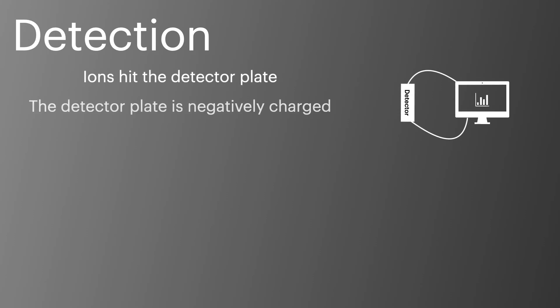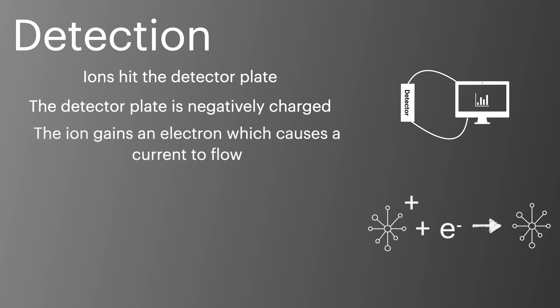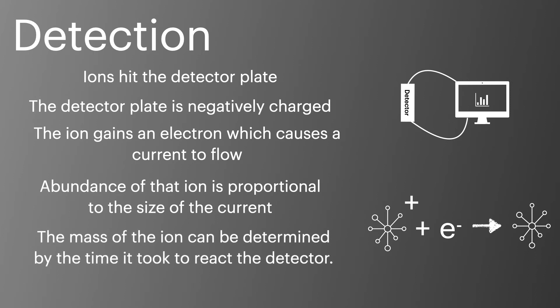Detection is the final step of the mass spectrometer. Ions hit the detector plate after travelling down the flight tube. The plate is negatively charged, and when positive ions hit the plate, they cause a current to flow. The abundance of that ion is proportional to the size of the current that flows, and the mass of the ion can be calculated using the time it took to arrive at the detector.